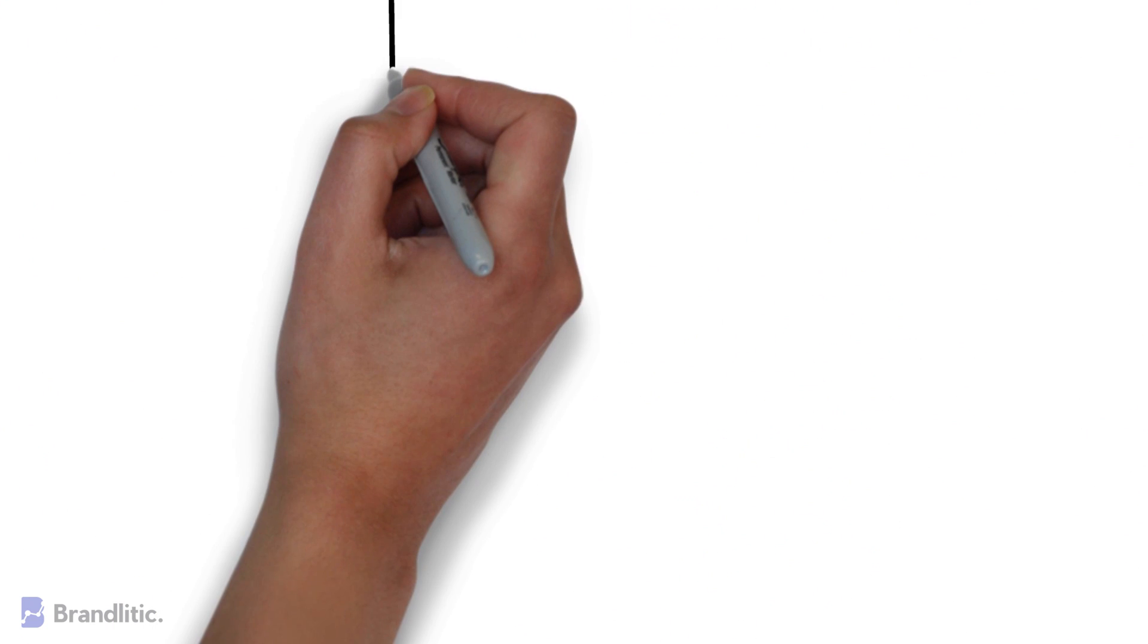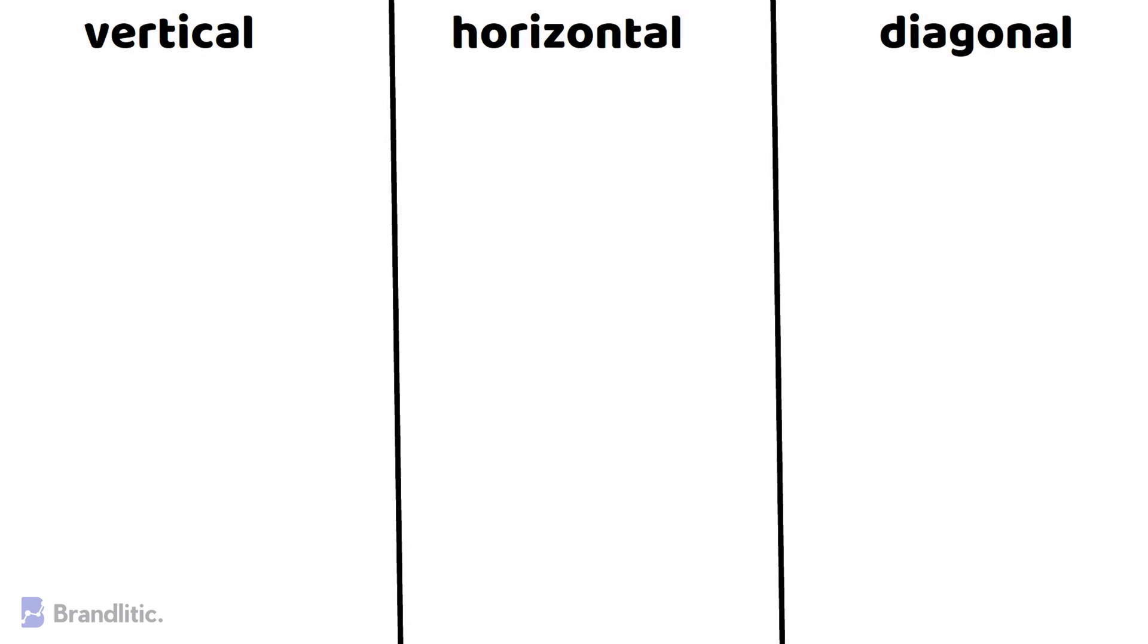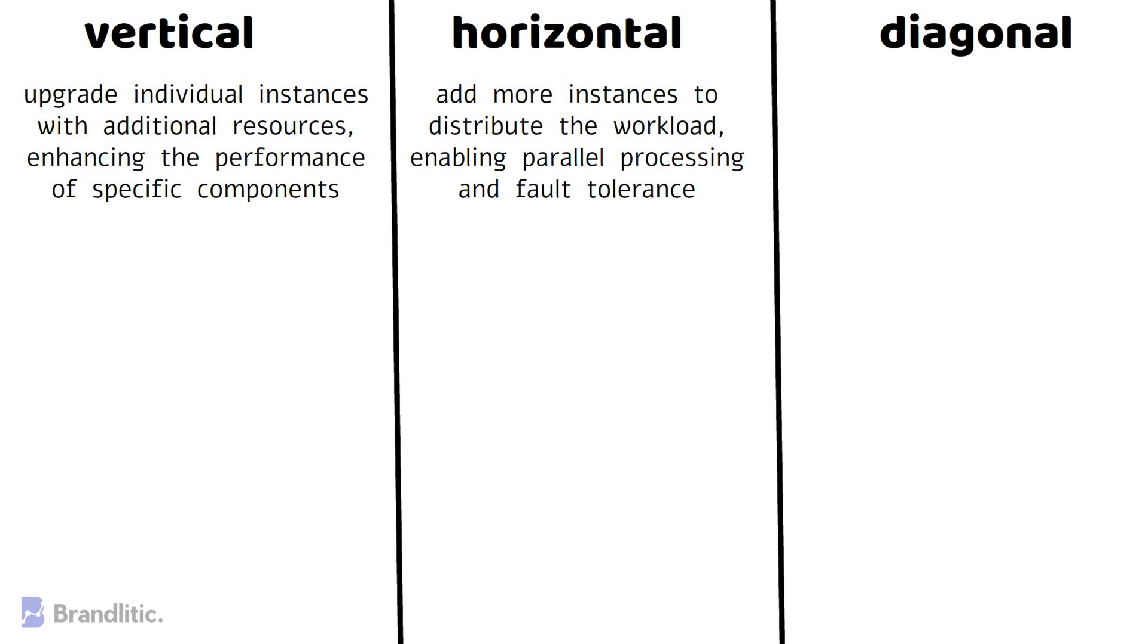Let's summarize the difference between vertical vs horizontal vs diagonal scaling in cloud. In vertical scaling, we upgrade individual instances with additional resources, thereby enhancing the performance of specific components. In horizontal scaling, we add more instances to distribute the workload, enabling parallel processing and fault tolerance. In contrast, diagonal scaling combines both approaches to achieve optimal performance.